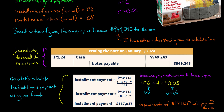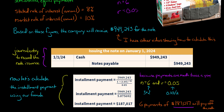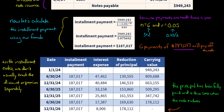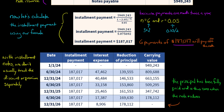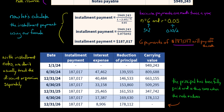Here is the amortization table. There's no separate discount column because we netted everything together. The initial book value or carrying value of the note is $949,243. The payments are always the same — six payments of $187,017, three years semi-annual. A portion of each payment goes toward interest, and the rest goes toward reducing the principal — the amount owed.